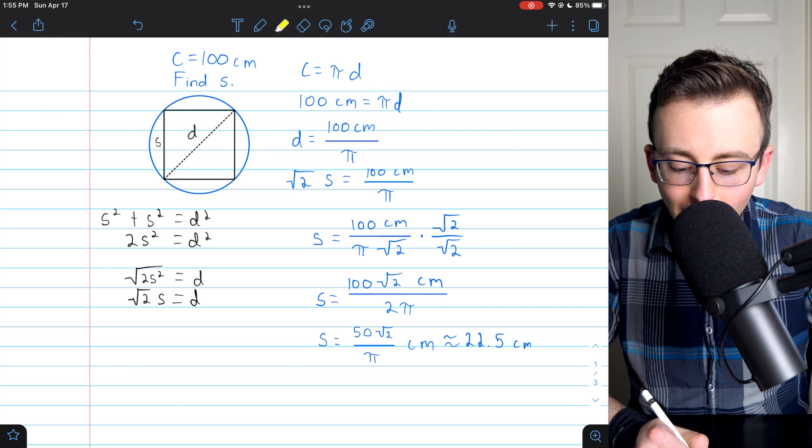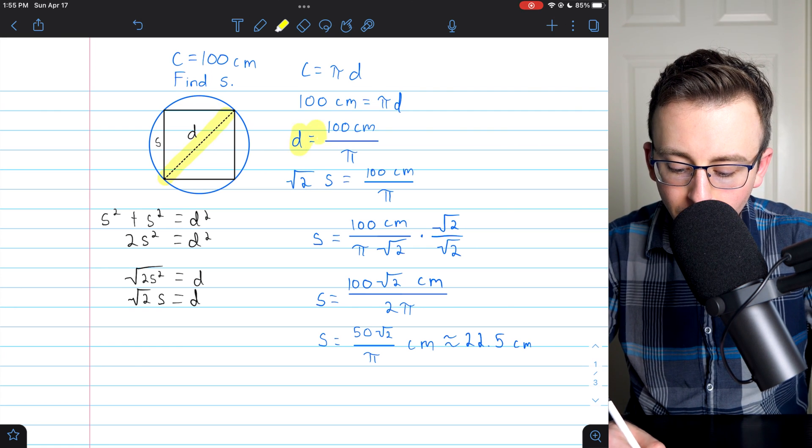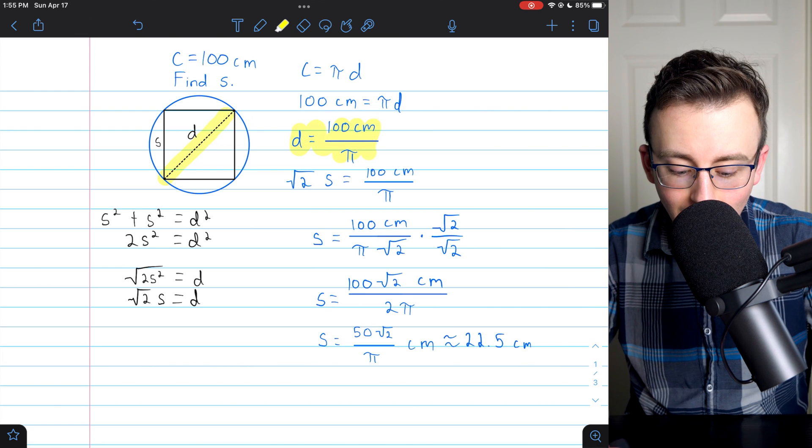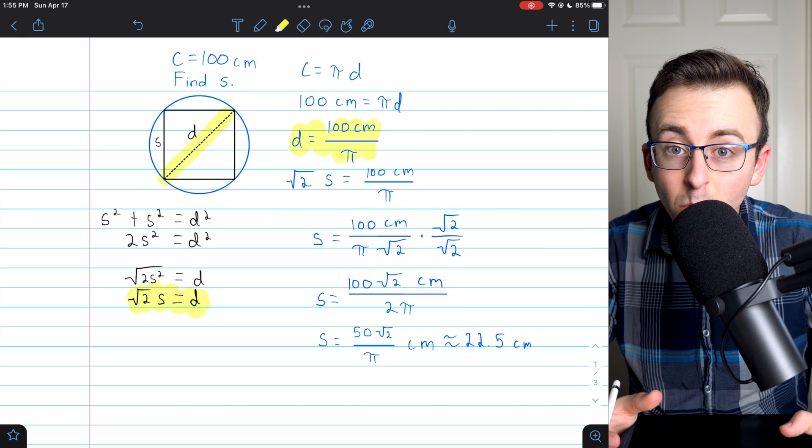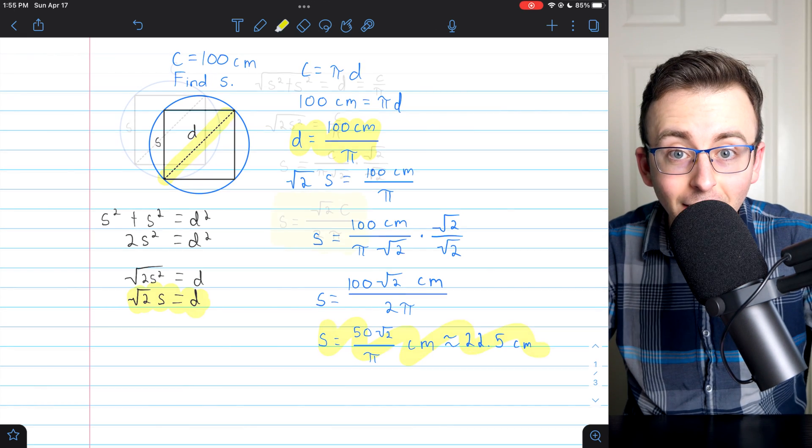All we have to do is find the diameter of the circle, which happens to be the same as the diagonal of the square, and then combining those two equations allows us to solve for s.